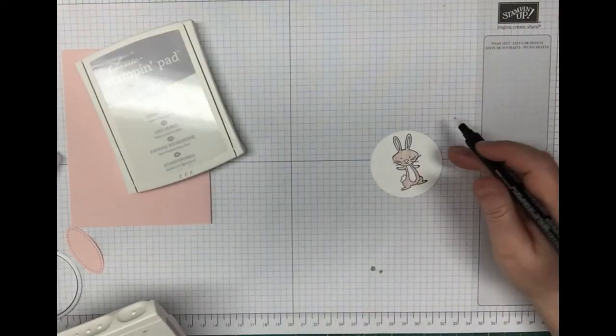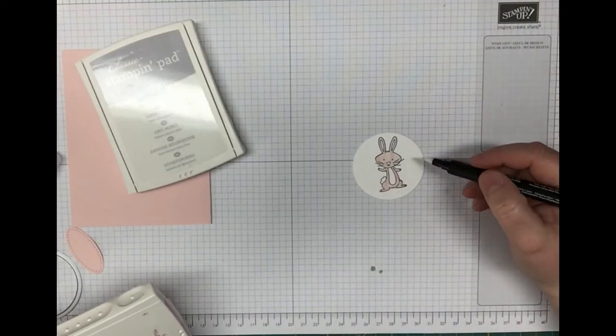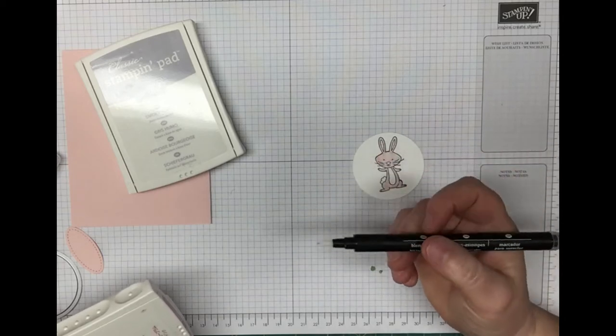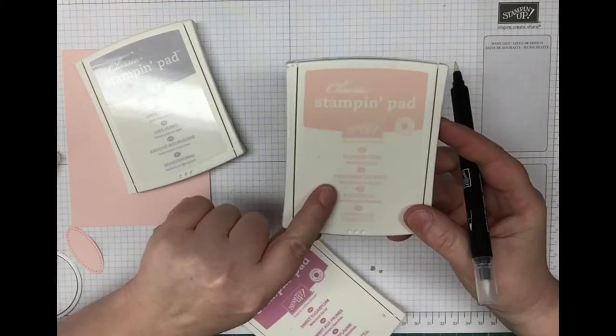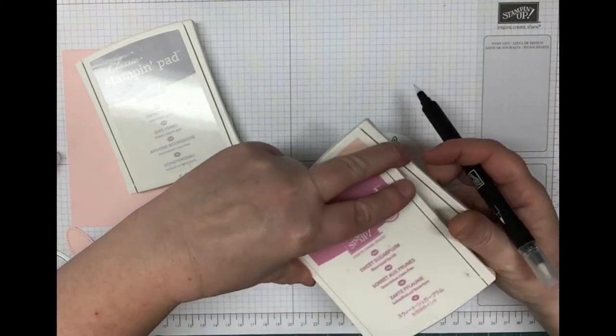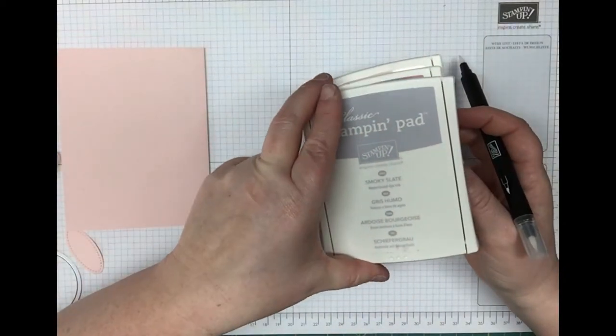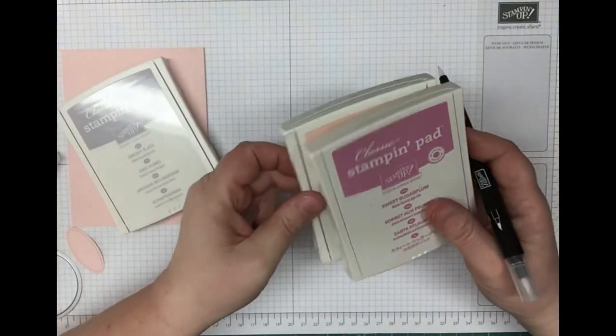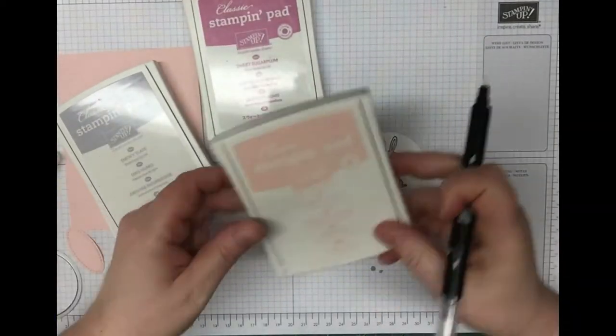What I'm doing here is coloring him in with the blender pens and the ink pads: powder pink, sweet sugarplum, and smoky slate. I've already colored in his whole body with powder pink.